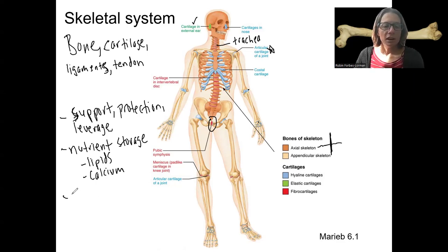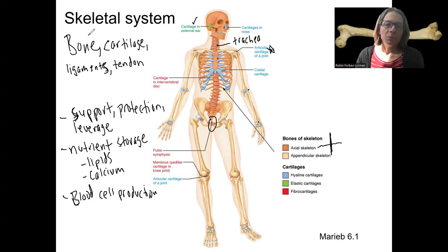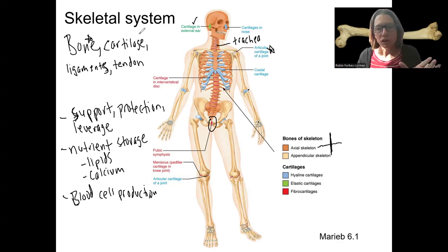Then the last function is blood cell production. In red bone marrow — that's the location of all the production of our blood cells throughout our entire lives. So we'll focus mostly this week on bone, a little bit of review and intro, and cartilage is going to relate to some of bone's functions. We'll talk more about cartilage and then more about ligaments when we get to talking about joints.